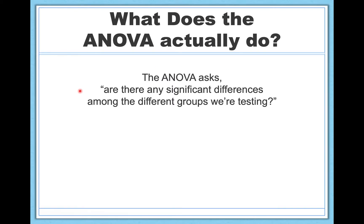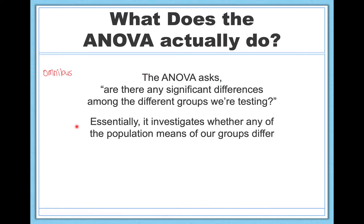The analysis of variance asks: are there any significant differences among any of the different groups we're testing? This is called an omnibus test, which basically means it's a general test addressing that question. It doesn't ask whether one specific group differs from another — it just asks whether any significant differences exist among any of the groups. It asks whether any of the population means of aggression across our different political affiliations differ from one another.